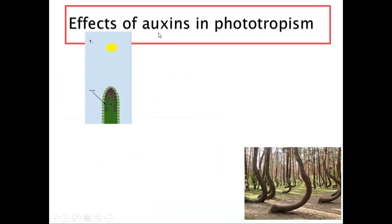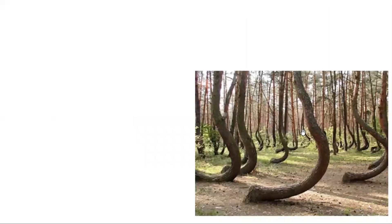So what is the effect of auxins in phototropism? You can see what auxins have done — if you keep changing the direction of light, the plant keeps bending in any way you want. Why? Because it is supposed to follow the source of light.